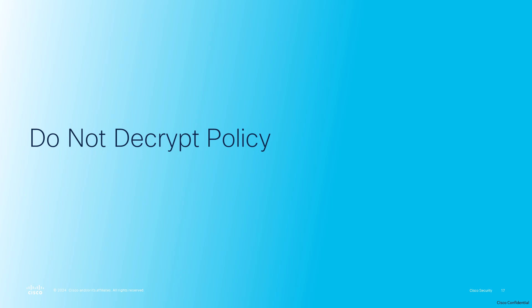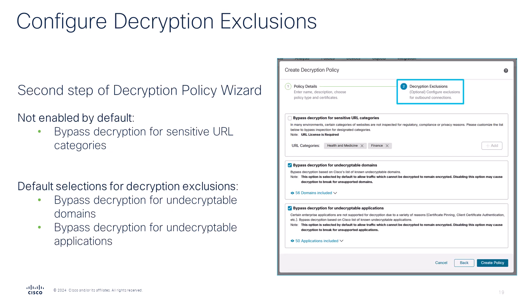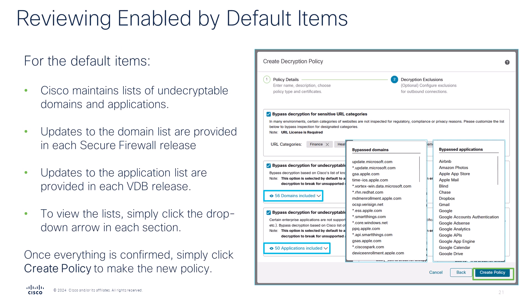Moving on, we have the new Do Not Decrypt Multi-Step Policy Wizard. This offers the option to configure decryption exclusions for outbound connections that will not impact existing decryption policies. When working with the wizard, you'll enter a policy name, configure outbound protection, select an internal certificate authority, and then click Next to configure decryption exclusions, which has undecryptable domains and undecryptable applications selected by default. To enable sensitive URL categories, click the checkbox to the left and click the Add button on the right to select and deselect other URL categories from the pop-up list. With bypass decryptions chosen, users should review their selections by noting URL categories selected, if enabled, and check the default lists by clicking the related drop-downs. Once everything has been reviewed, all that's left is to click Create Policy.